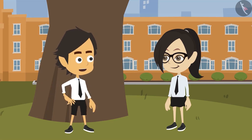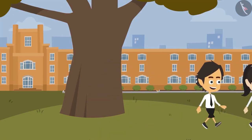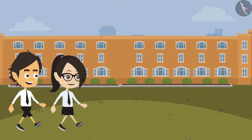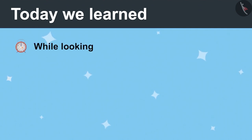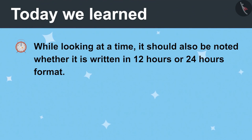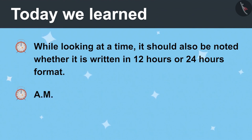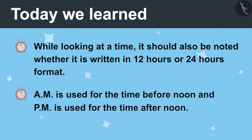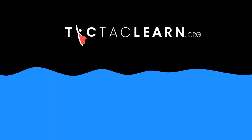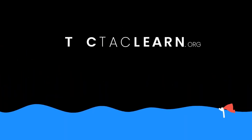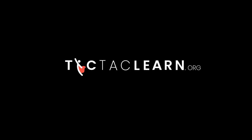Absolutely correct, Vandana — I knew you could solve this riddle! From this incident it is understood that while looking at time, the format in which it is written should be kept in mind. While looking at the time, it should also be noted whether it is written in 12-hour or 24-hour format. AM is used for the time before noon and PM is used for the time after noon.